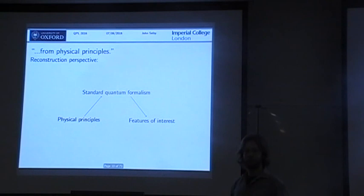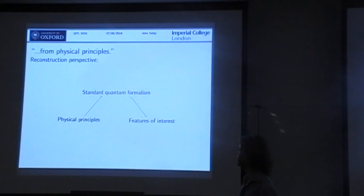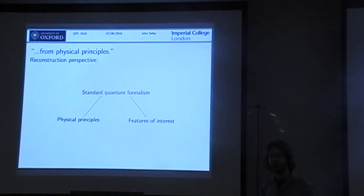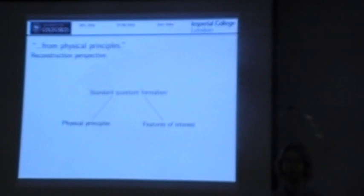Various people have gone further than this and taken some bunch of physical principles in some framework and managed to reproduce the standard quantum formalism, so you get all of your standard results out. There are many reconstructions in the generalized probabilistic theory framework. But we still have the issue that all of these different bits of the physics are still kind of tangled up. It's difficult to say whether some feature is due to entanglement, interference, or contextuality. So if we want to really understand where the computational power of quantum theory comes from, it's useful to try and disentangle these different concepts.